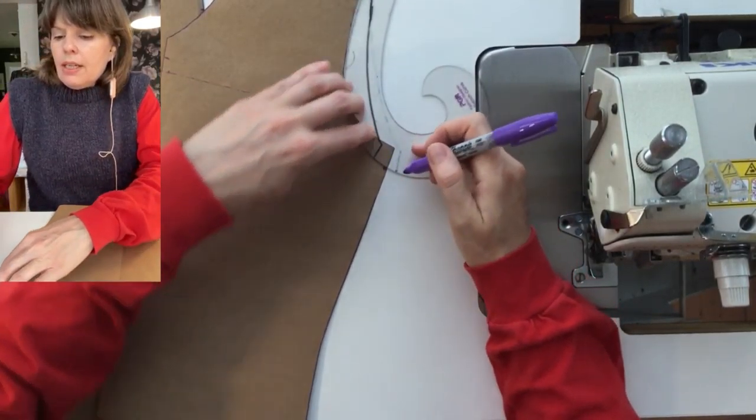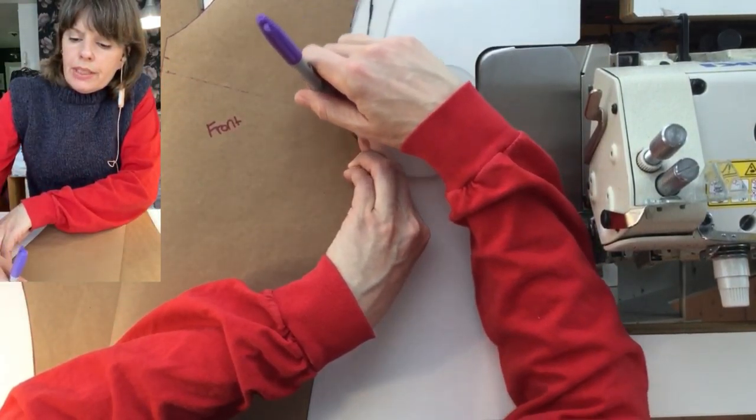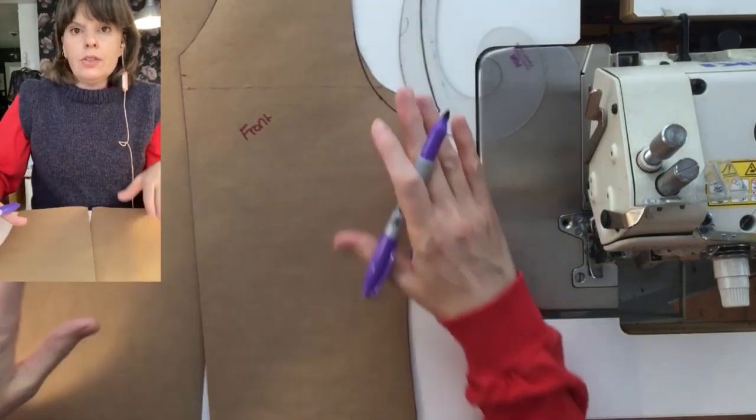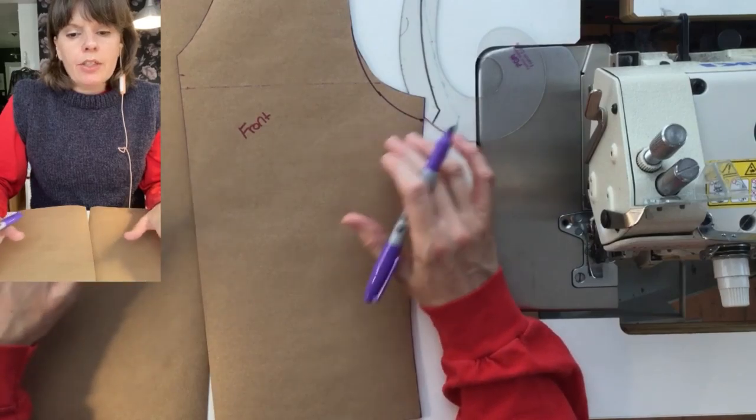And cut out those curves and then trace those curves onto the underlays and if you're using it with the binder onto the stable layers.